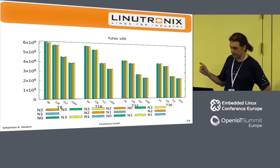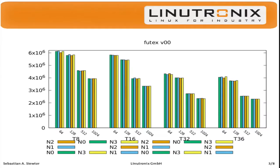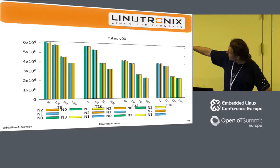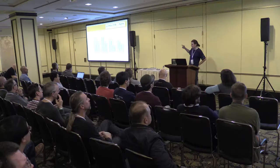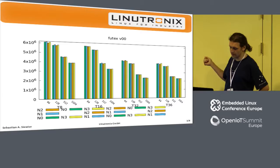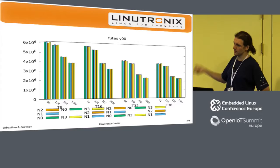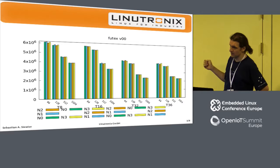On the left side you see T8 — you have eight threads working on 64 futexes. The four bars are NUMA nodes 0, 1, 2, 3 — so it's eight threads per node, and four nodes in parallel, doing a futex wait with an invalid argument, which means it does a hash bucket lookup and comes back again. It does about six million times a second.